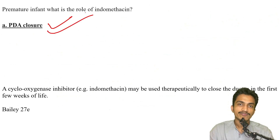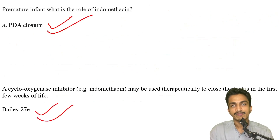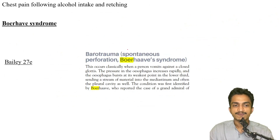Indomethacin's role: it is most commonly used for patent ductus arteriosus (PDA) closure — a straightforward line from Bailey, not much to discuss.